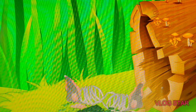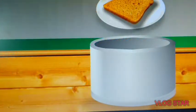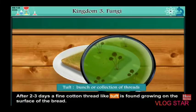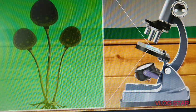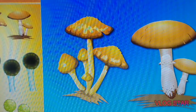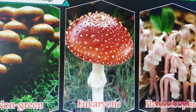Fungi are multicellular organisms and can live in different habitats. Let us try an activity to observe fungi. Take a moist piece of bread and keep it in a container with a lid for 2 to 3 days. After 2 to 3 days, a fine cotton thread-like tuft — that is, a bunch or collection of threads — is found growing on the surface of the bread. Prepare a temporary mount of a few threads from this culture and observe it under the microscope. All these are non-green, eukaryotic, heterotrophic organisms — that is fungi.